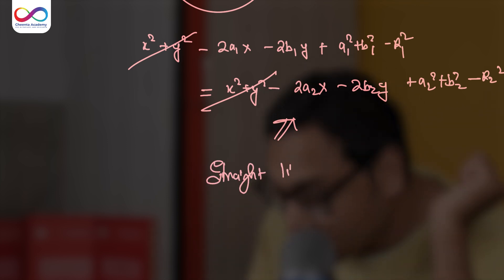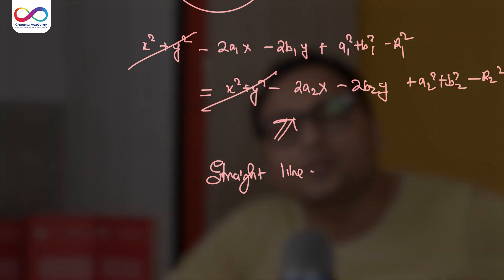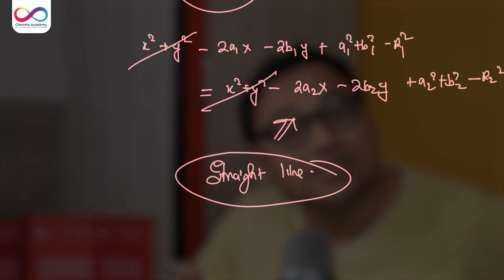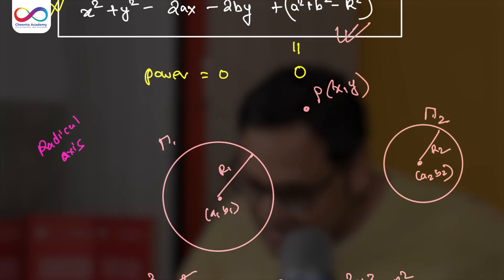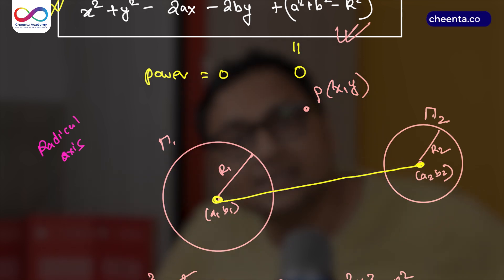So the locus of the points which have equal power with respect to the two circles is actually a straight line.